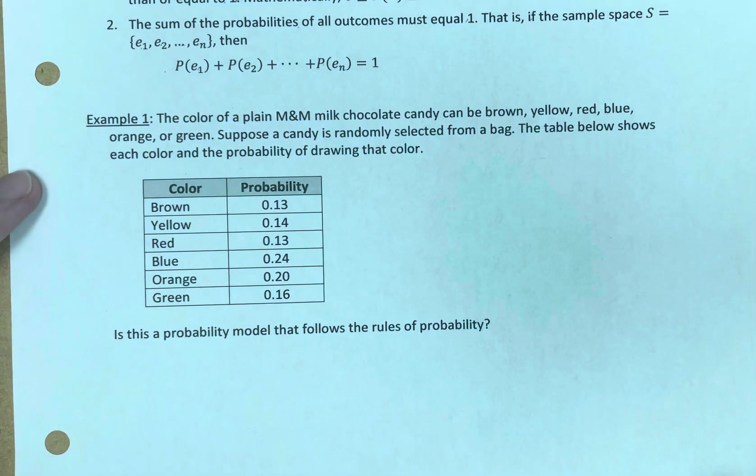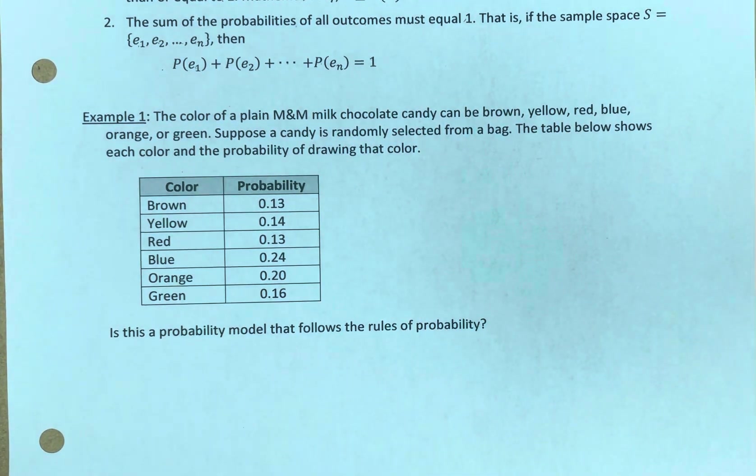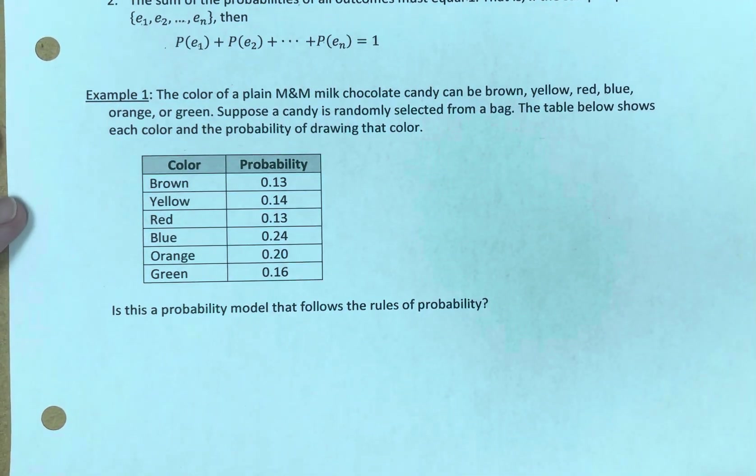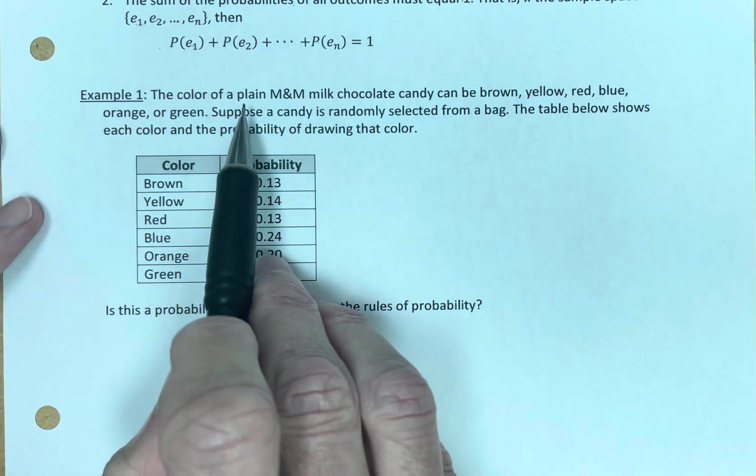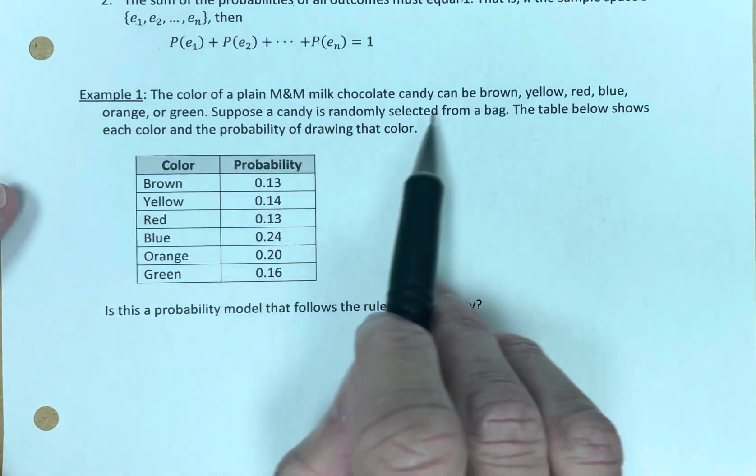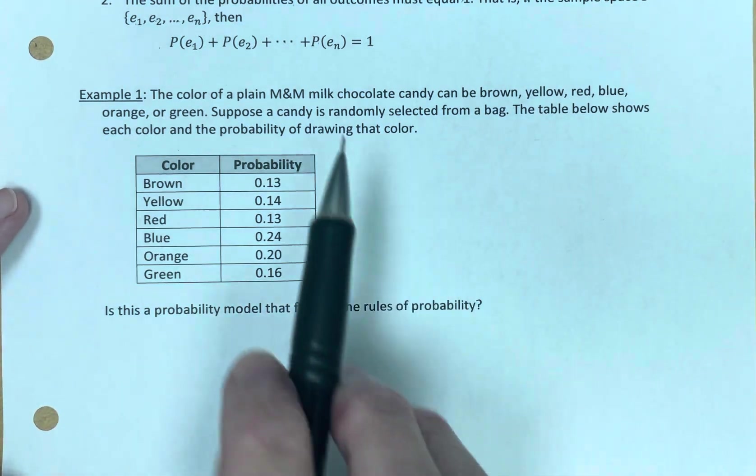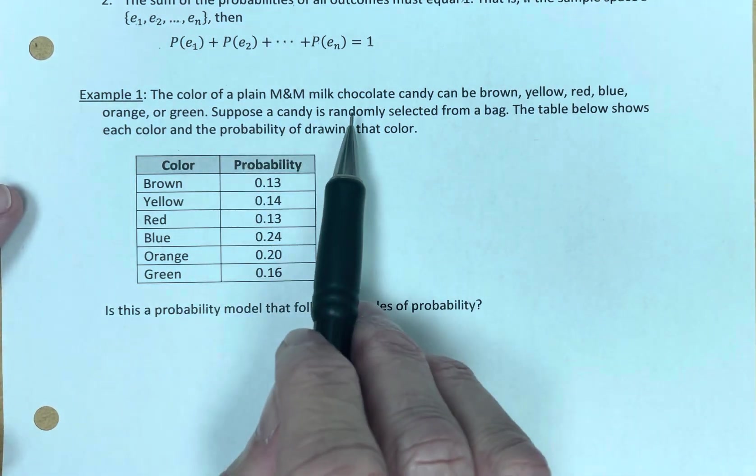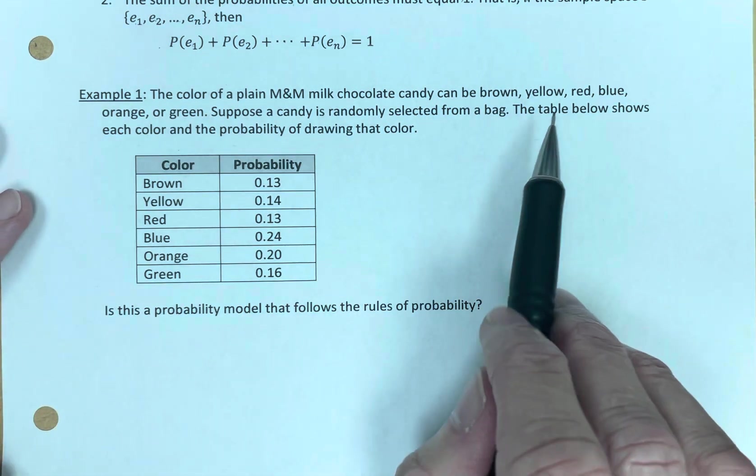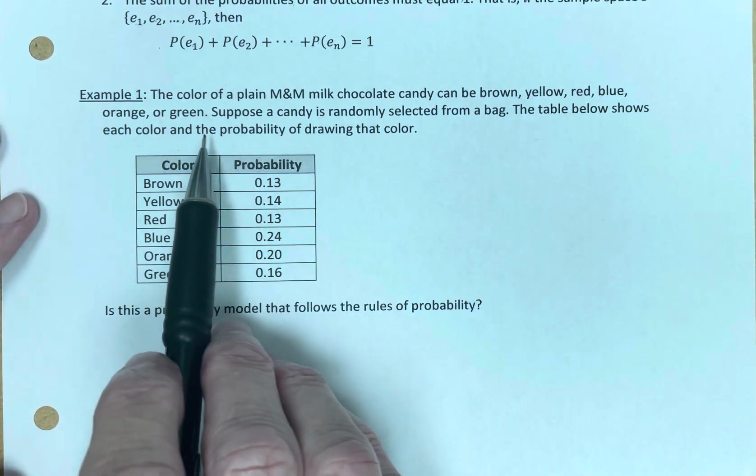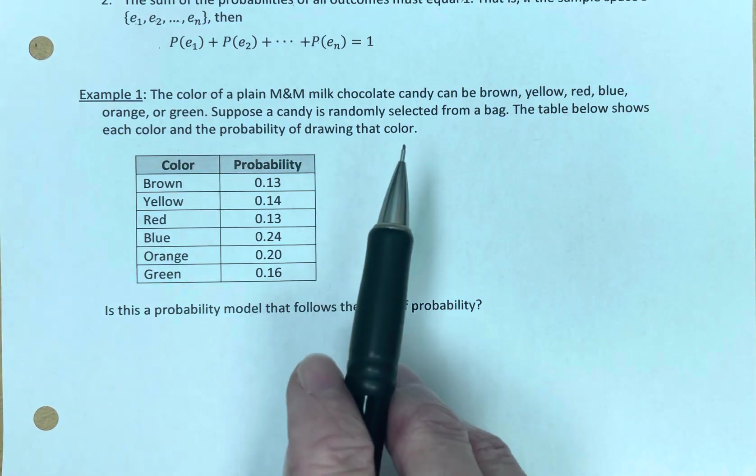Let's take a look at and apply these rules here. Give me a second to get my clipboard up. The color of plain M&M milk chocolate candy can be brown, yellow, red, blue, orange, or green. Suppose a candy is randomly selected from a bag. The table below shows each color and the probability of drawing that color.